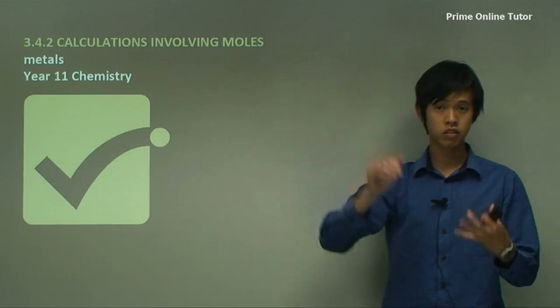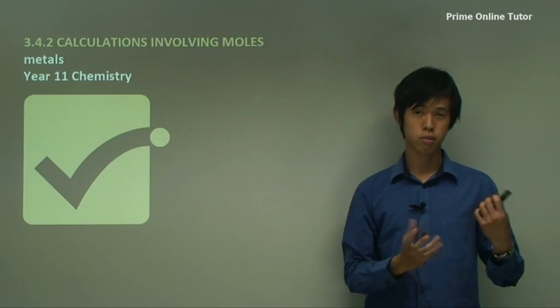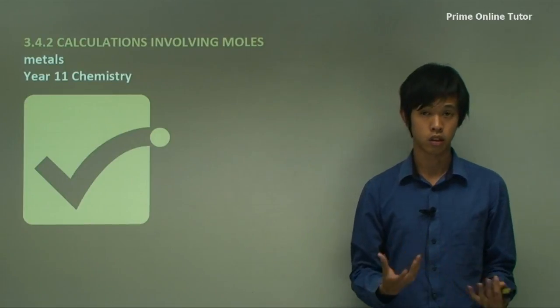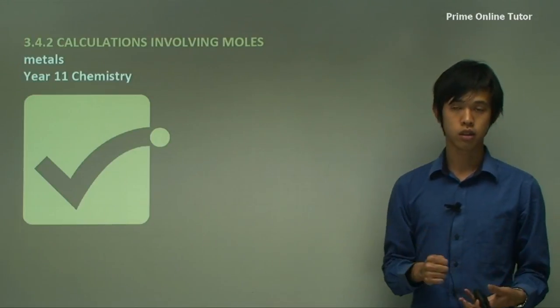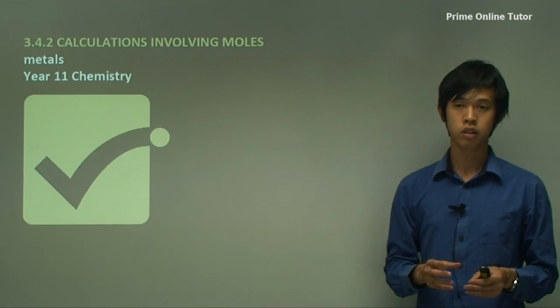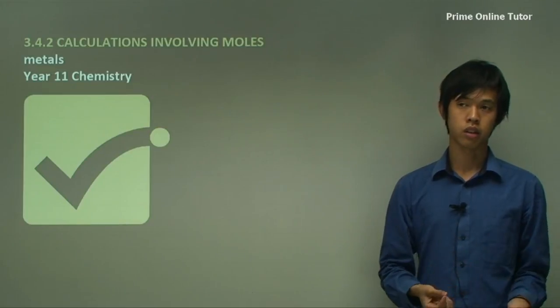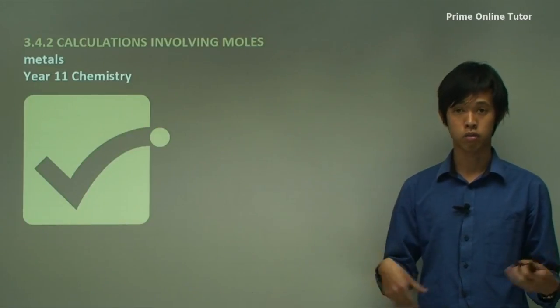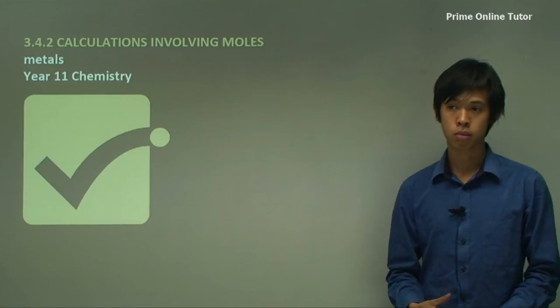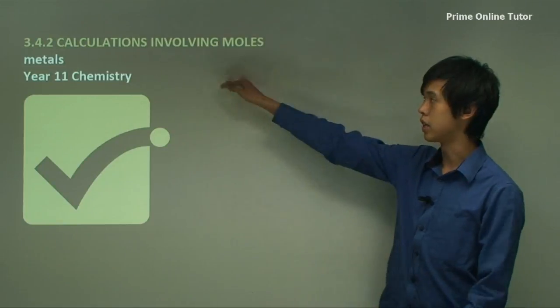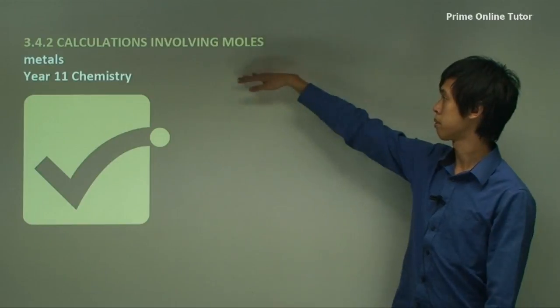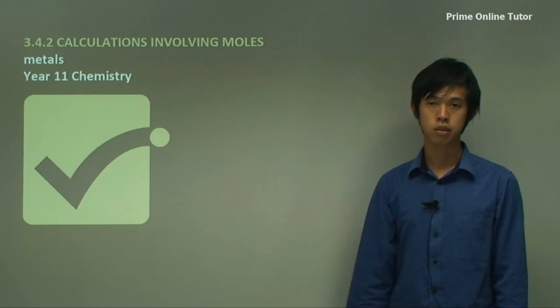So in previous lessons, we've looked at what the mole is and how we use it as a unit of measure. And in this set of lessons, we're going to look at how we use the mole to work out other important things for chemical reactions, like how much of a particular reactant we'll need, how much of a particular product we'll get. And that can all be done using the mole.